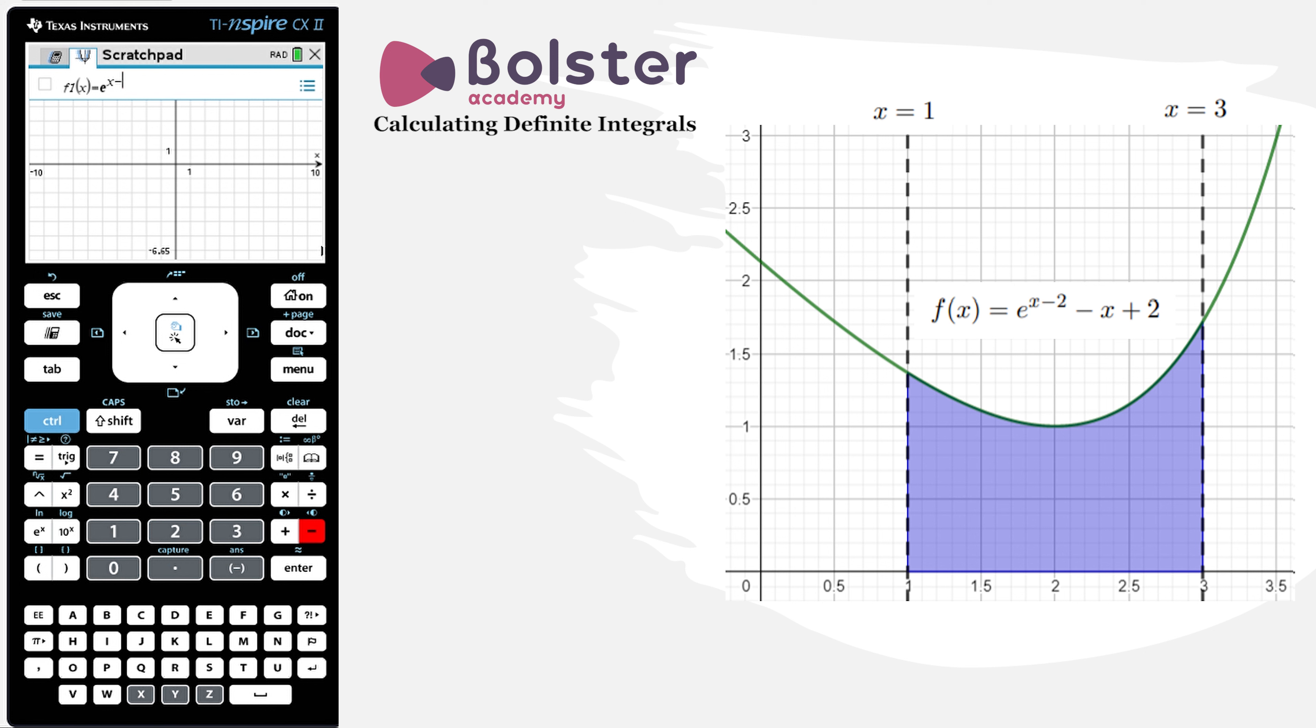So it's e to the x minus 2, right arrow to get out of the power, minus x plus 2. There's the graph of the function that we're interested in and now we want to get this area between the graph and the x-axis.